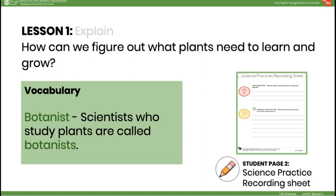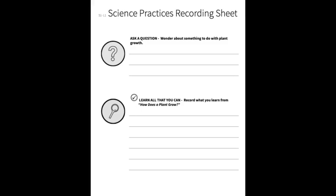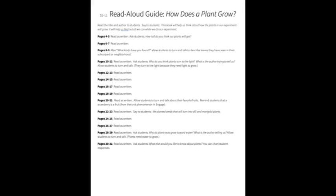In the Explain, introduce the vocabulary term botanist, explaining that a botanist is a scientist who studies plants. Students will get to be botanists throughout this unit using science practices to do their experiments. Turn their attention to the science practices recording sheet in their student journal, shown here on student pages two through five. Review these steps with students, recalling the question for the experiment — what do plants need to grow — and recording it on page two. Next, scientists learn all they can about their question. To do this, use the book How Does a Plant Grow? in a read aloud with students. The read aloud guide for teachers is on teacher page seven. As you read, tell students to write down what they think is important to know about plant needs in the 'learn all you can' section of the science practices recording sheet.